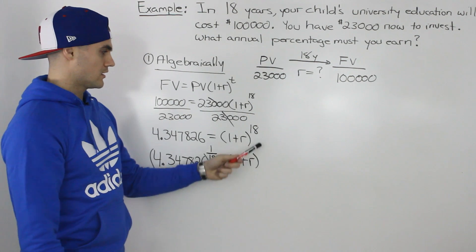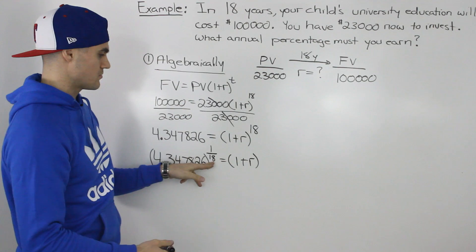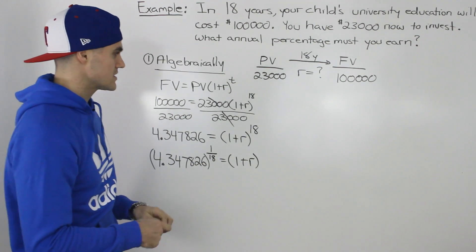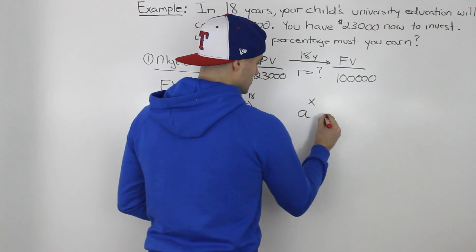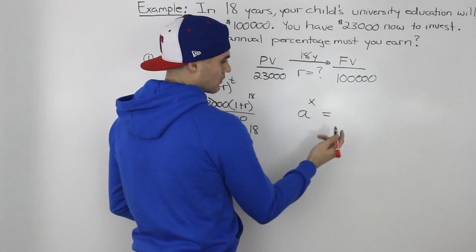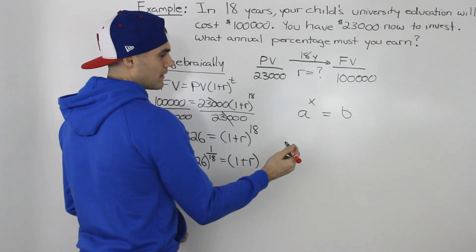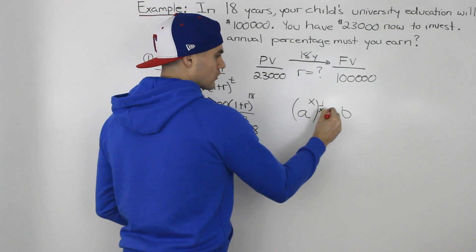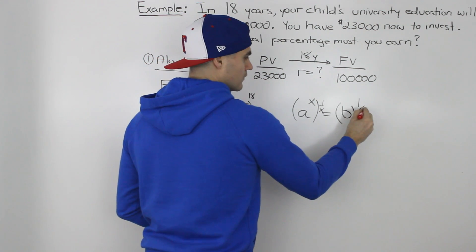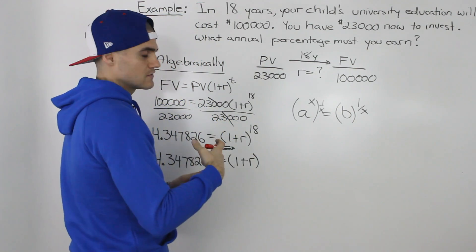To get rid of that power 18 on the right side, we would take both sides to the power of 1 over 18. The reason why that works is, let's review a little algebra. If we have A to the power of X equals B, and we want to get A by itself, we take both sides to the power of 1 over X, the reciprocal of that exponent. X times 1 over X just gives you 1. So A to the power of 1 is just A.